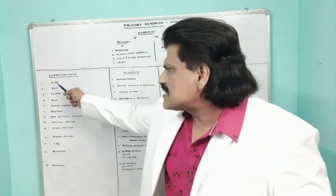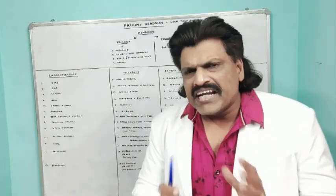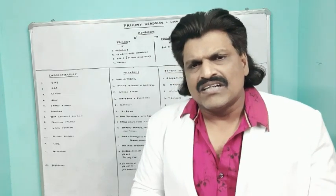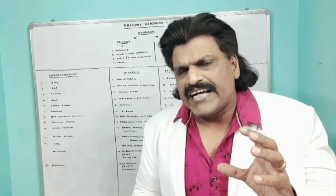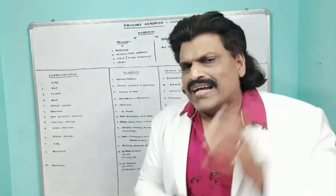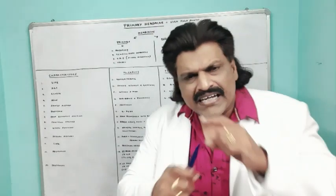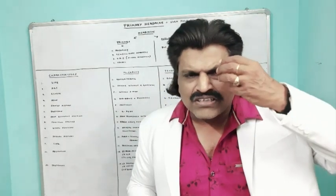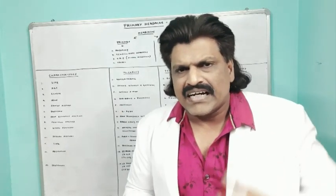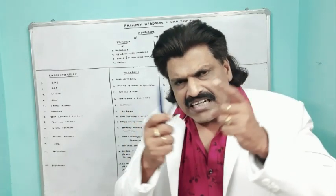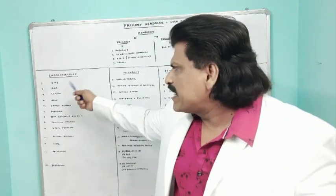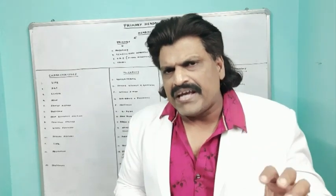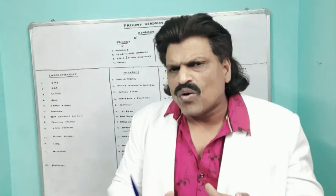The first characteristic is site. Migraine is usually unilateral — it is known as one-sided headache. For tension-type headache it is generalized, and for cluster headache it is orbitofrontal. So: migraine is unilateral, tension-type is generalized, and cluster headache is orbitofrontal.